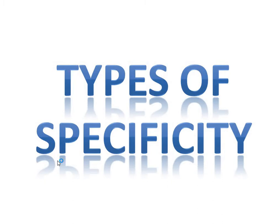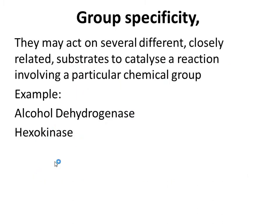We will learn each of these with some specific examples. First, group specificity. Some enzymes exhibit group specificity — that is, they may act on several different though closely related substrates to catalyze a reaction involving a particular chemical group. An example of this kind of enzyme is alcohol dehydrogenase or hexokinase.